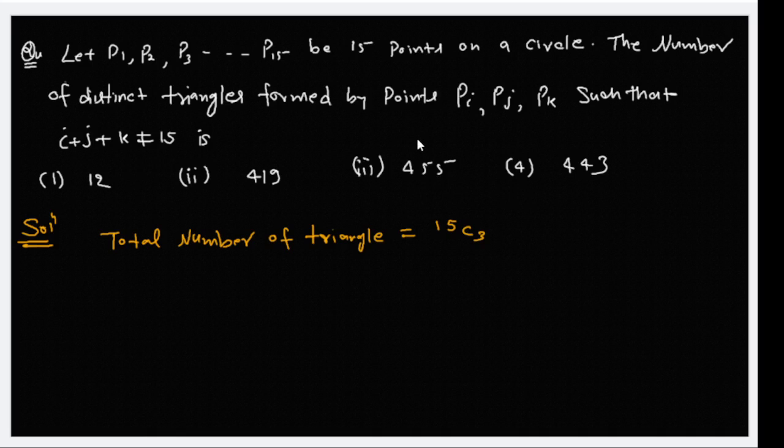How do we choose three points? The number of ways to choose three points out of 15 points to form a triangle is 15C3. Now, this is the given condition: i plus j plus k not equal to 15. So we need to form some cases in which we subtract those cases where i plus j plus k equals 15.